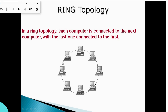Next we have ring topology — a ring structure. In ring topology, each system has a minimum of two NIC cards (network interface cards), and the network cards are connected to form a ring network.